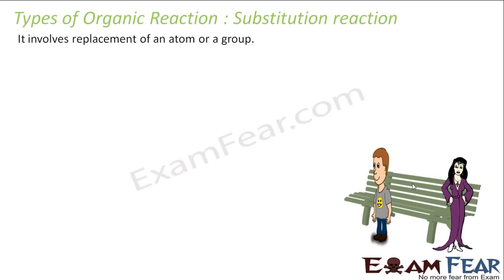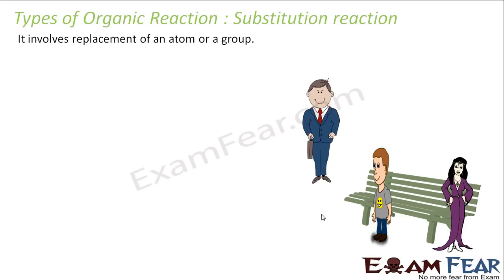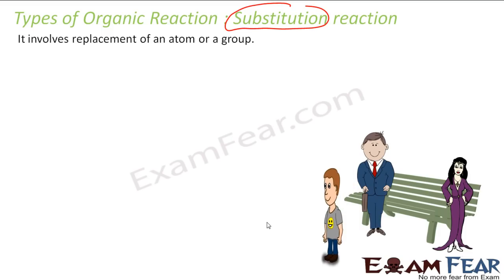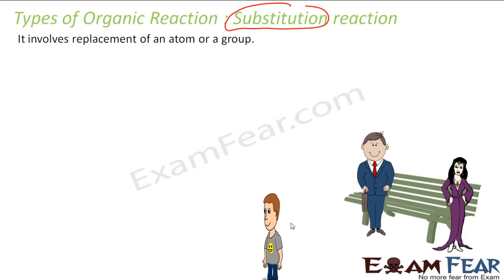Let us start with the substitution reaction — it involves the replacement of a group or atom. For example, a rich lady and a common man are sitting together on a bench in a park. Now a rich and influential guy comes and wants to sit there. Since he is rich and influential, he is able to displace the common man. That is what substitution reaction is — the rich guy has substituted the common guy.